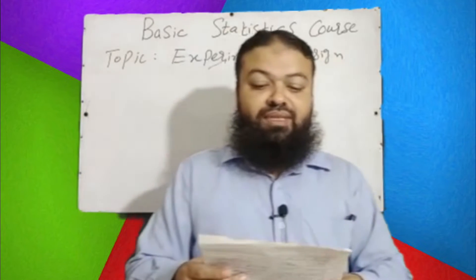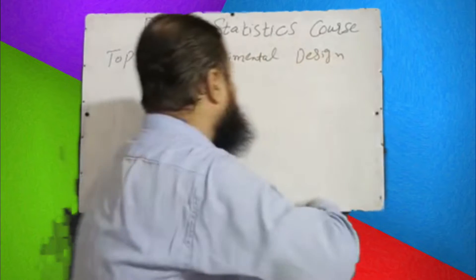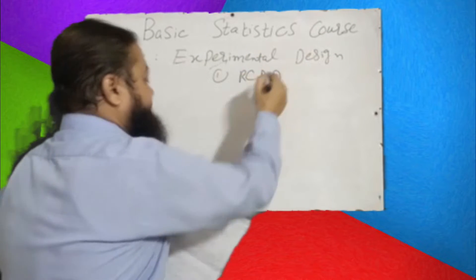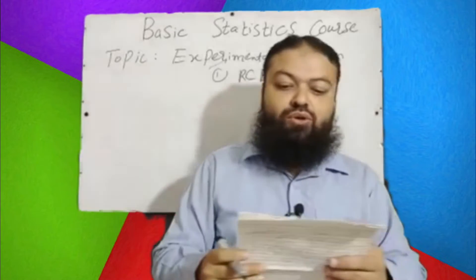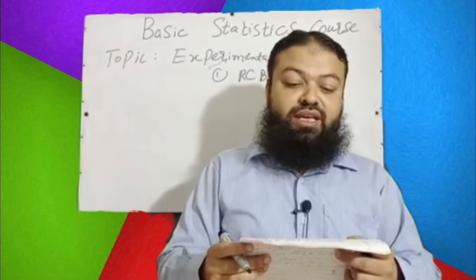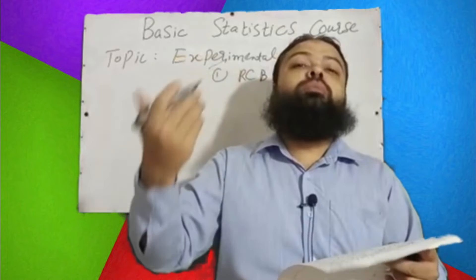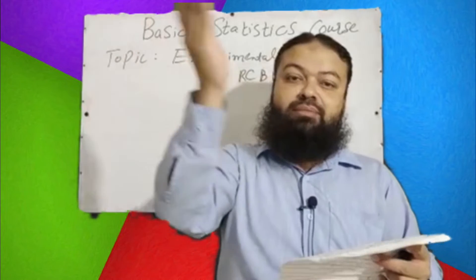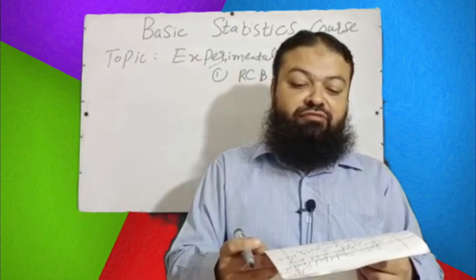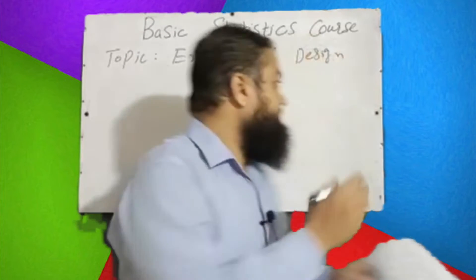Question number one of today's lecture: In a Randomized Block Design (RCBD), the homogeneity should be — a very important one — a) between blocks, meaning if there are four blocks, between b1 and b2; b) between treatments; c) within blocks; d) none of these.